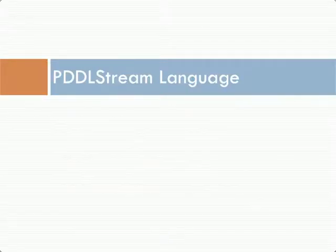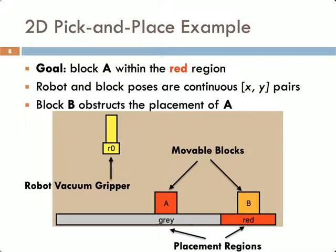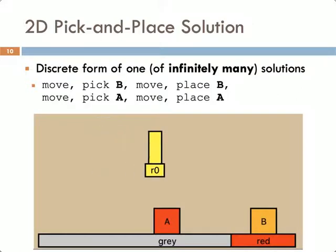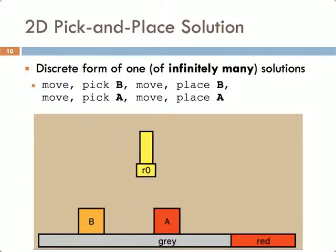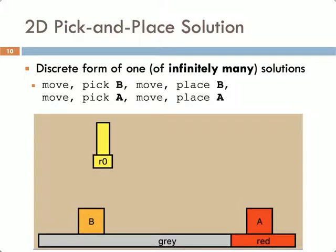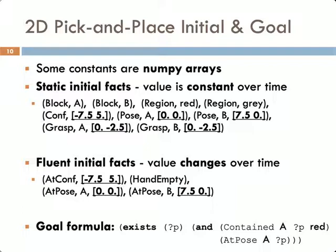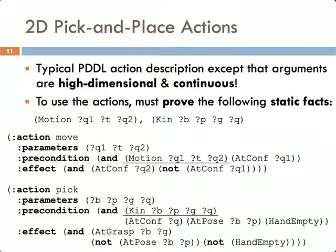Let me begin by describing the PDDLStream language, using the pick-and-place domain as a motivating example. Here the goal is for block A to be within the red region, and block B starts in a location that initially obstructs all safe placements. The state of the robot and the blocks are both continuous x-y pairs. Here is one of infinitely many solutions to this problem, as A and B have infinitely many placements that can satisfy this skeleton. The solution involves picking B, moving it out of the way, and then picking A and placing it within the red region. We can specify the initial state and goal conditions in the same manner as typically done in PDDL — the only difference is that arguments to predicates are now potentially continuous values, such as numpy arrays. We can describe move and pick actions similarly, where some parameters may be high-dimensional continuous values such as poses or configurations.